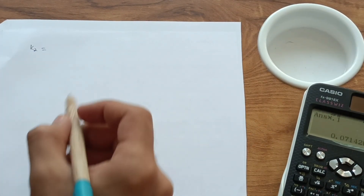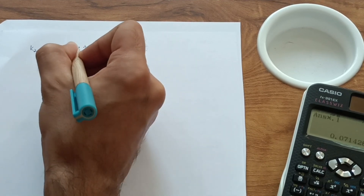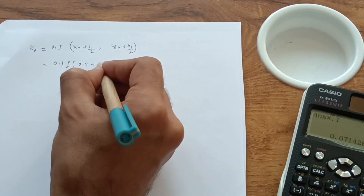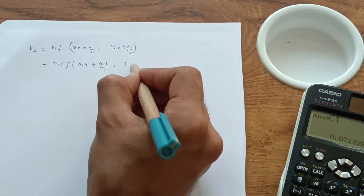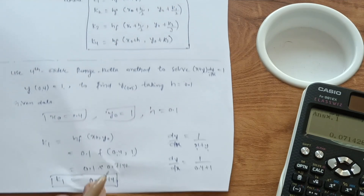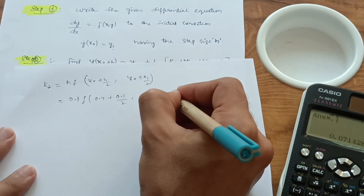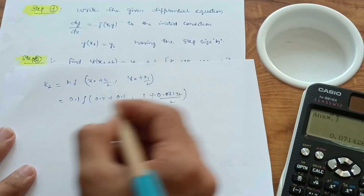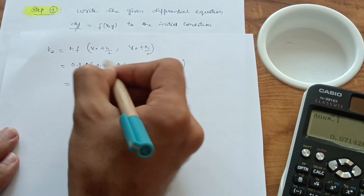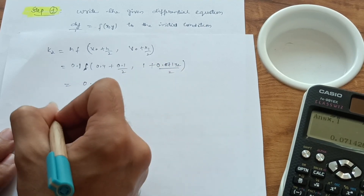Now k2 = h·f(x₀ + h/2, y₀ + k1/2) = 0.1·f(0.4 + 0.1/2, 1 + 0.0714/2) = 0.1·f(0.45, 1.0357). Using the function f(x, y) = 1/(x + y), calculate this value using a calculator — it approximately comes out to k2 ≈ 0.0673.